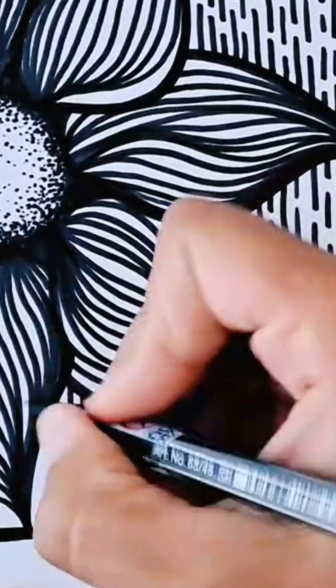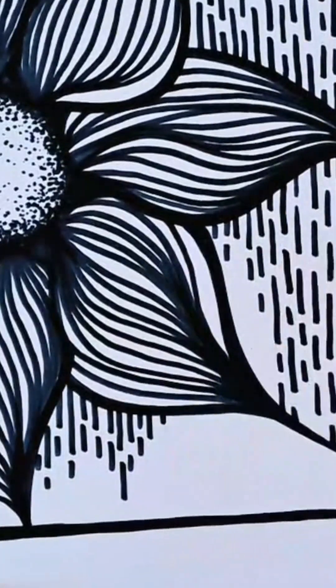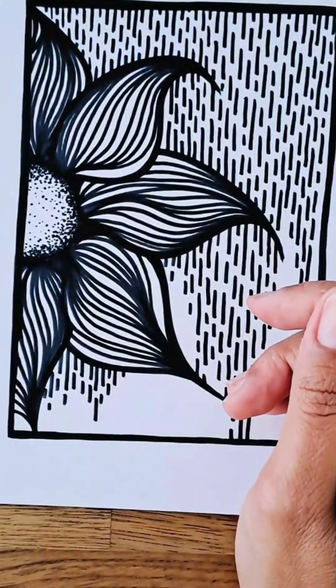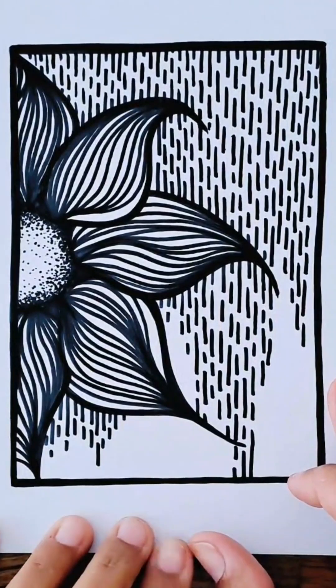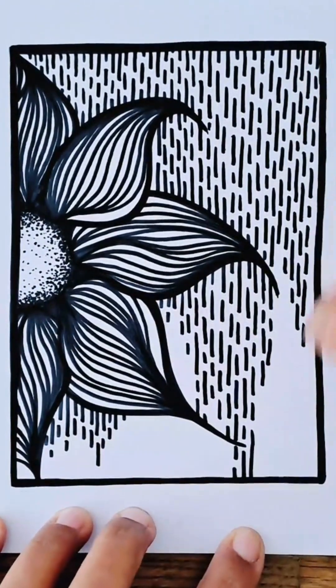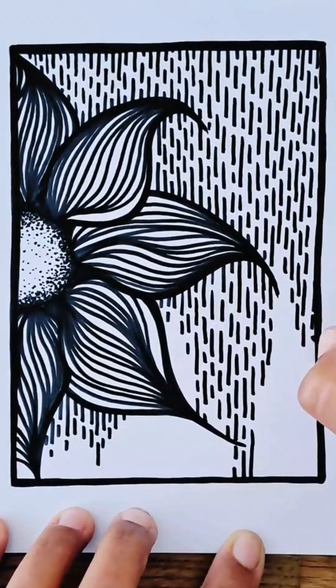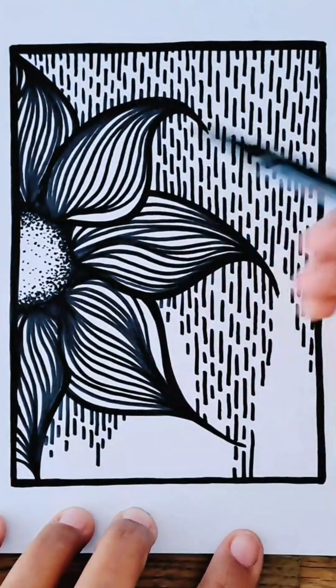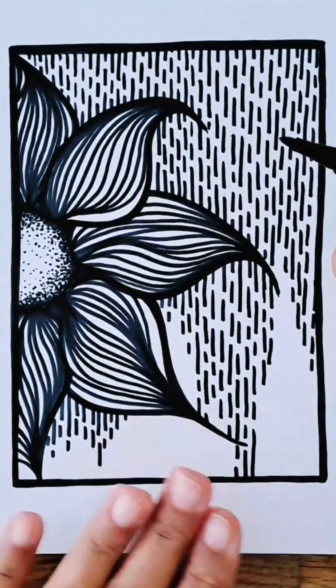There we go, just a few finishing touches. I decided to add a couple of extra drops in the background there. What do you think? How do you like it? I really enjoyed this one. I don't usually use a really thick marker to do my drawings, but I did use a thicker marker for this one and I think it turned out quite nice.